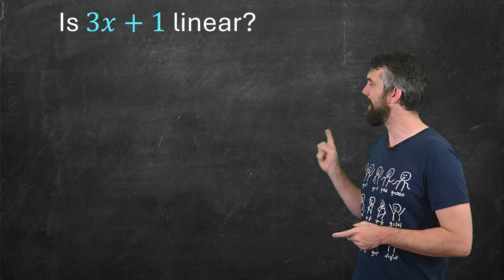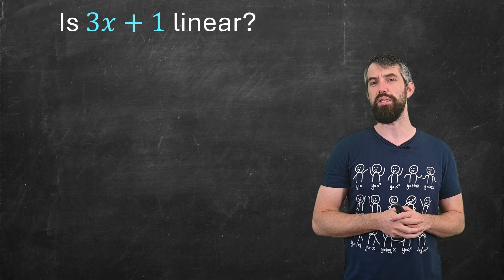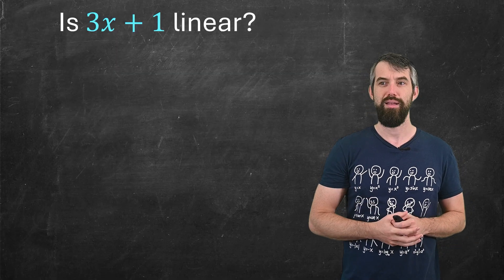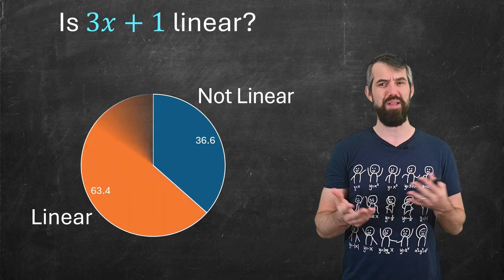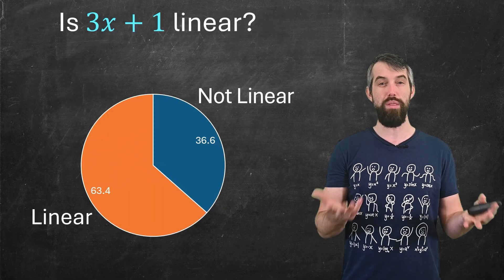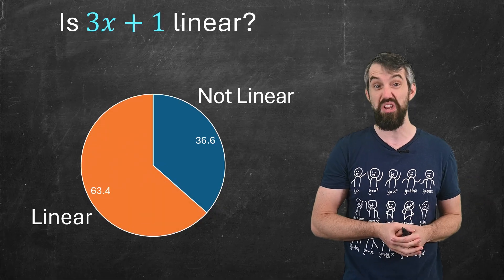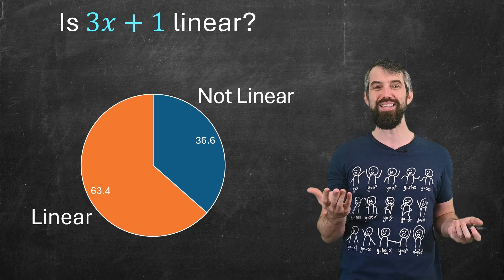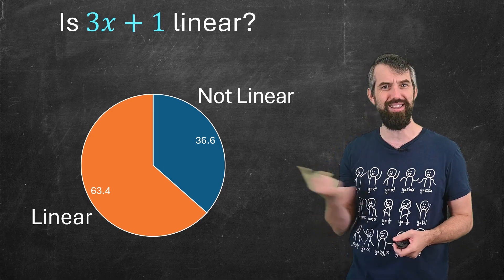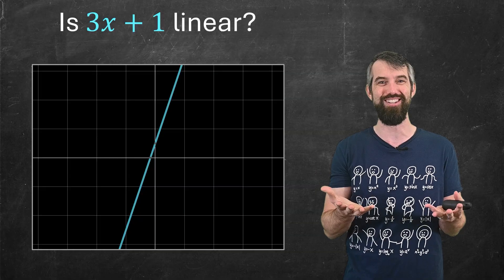This one's going to annoy people. Is the function 3x plus 1 linear? Apparently, again, it keeps on being about one-third, two-thirds for so many of these. One-third say no, this is not a linear function. You might be like, what do you mean it's not a linear function? Graph it. It's a line. That's linear. What's there to talk about?